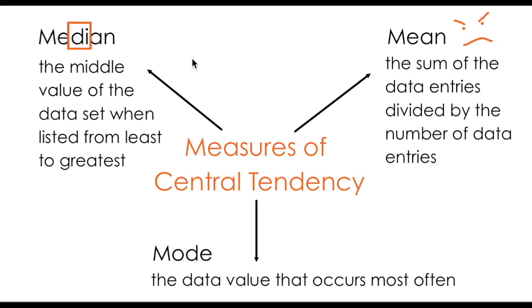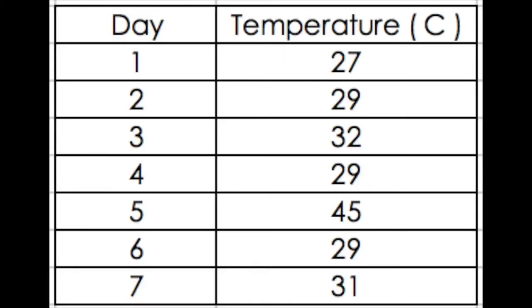Now that we've reviewed mean, median, and mode, let's look at an example that applies them. I have a table of data that summarizes the temperature in degrees Celsius over the course of seven days. In this case, I'm being asked to find the mean, median, and mode for this set of data.